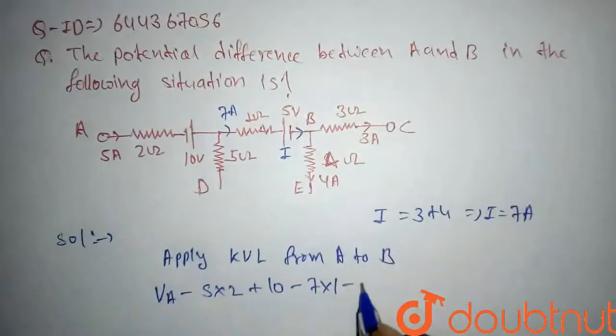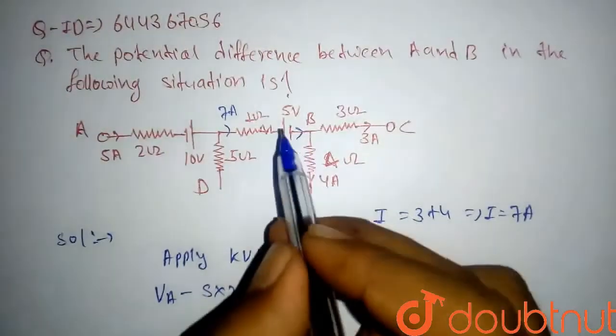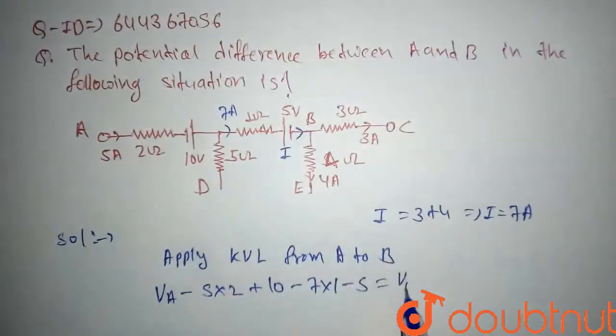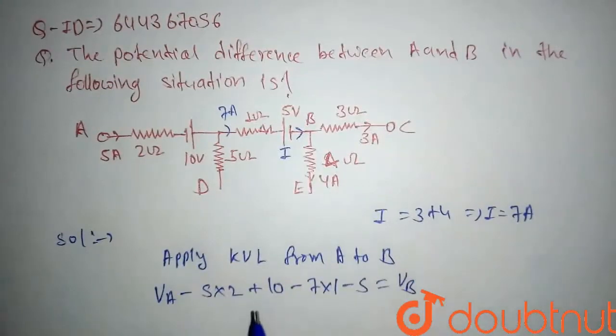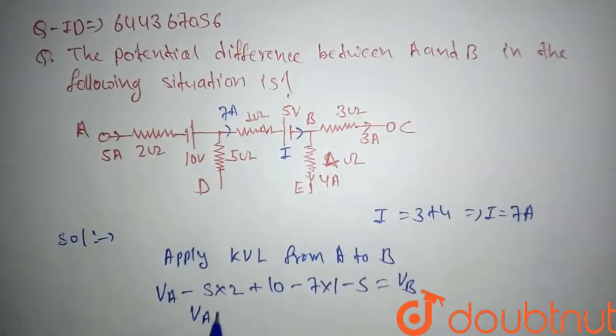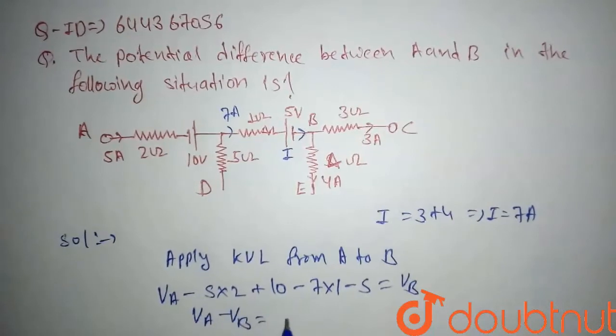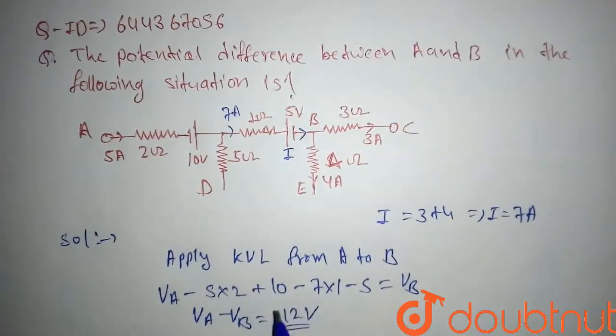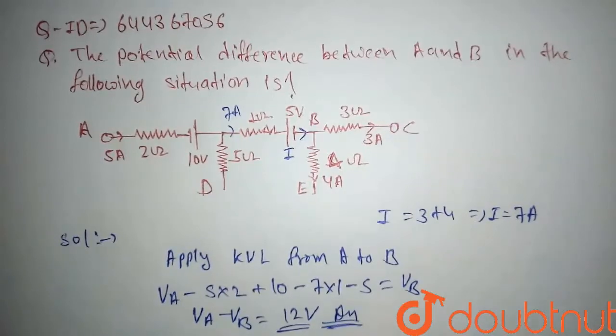And it will be equal to Vb. So after solving this, we will get Va minus Vb equals to 12 volt. So this will be our final answer. I hope you have understood. Thank you.